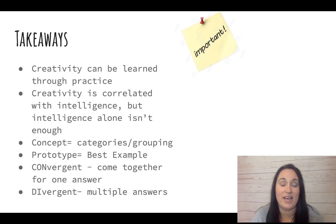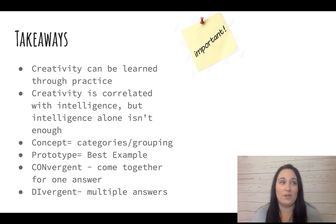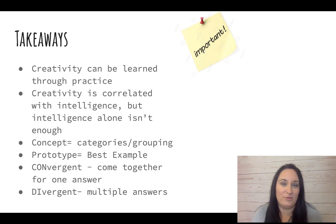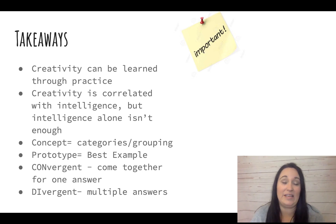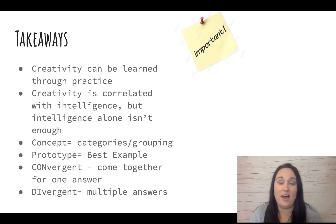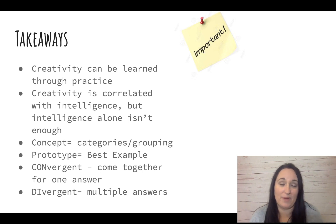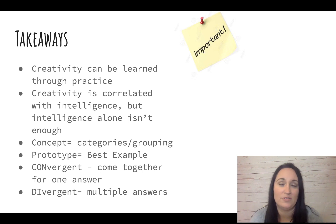So takeaways: creativity can be learned through practice. You might think you're not creative, but you haven't maybe given yourself time to be creative. The more you practice it, the more you give yourself space and time, and the more you are encouraged to be creative, the more you will be able to do it. Creativity is correlated with intelligence, but intelligence alone isn't going to make you creative. A concept is a category or grouping. A prototype is our best fit or best example of those categories. Convergent means to come together with a single solution. Divergent means coming up with multiple solutions. And that is it for Module 34 and I will see you in class.